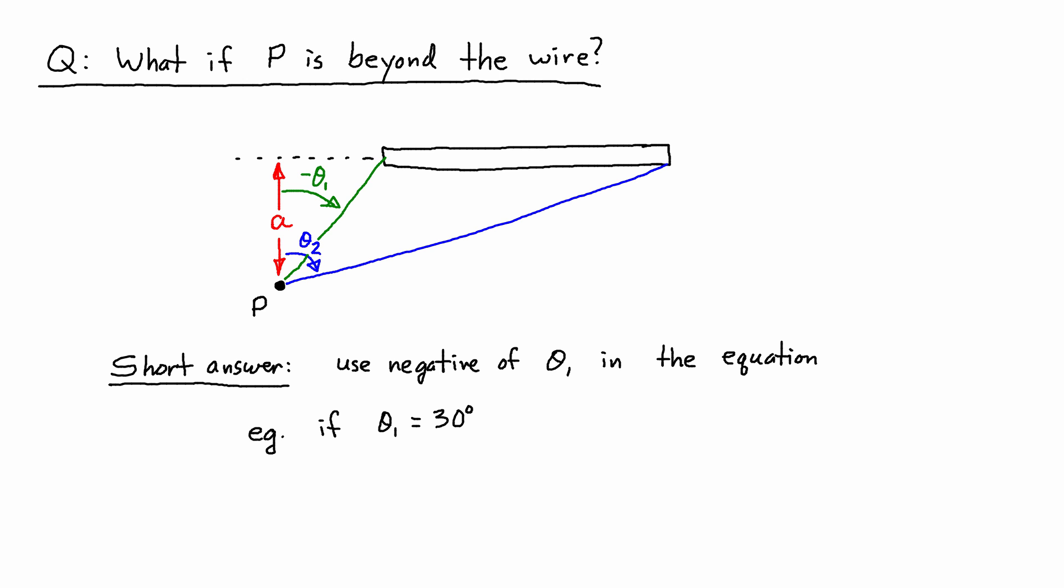For example, if theta 1 was negative 30 degrees and theta 2 in this case is quite big, maybe 80 degrees, then I would substitute those into the equation and keep the negative 30.